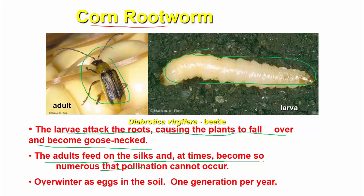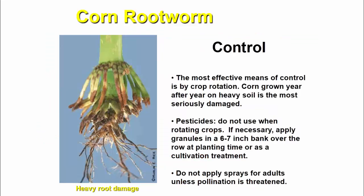The corn rootworm overwinters as eggs in the soil, with one generation per year. Corn grown year after year on heavy soil suffers the most serious damage.